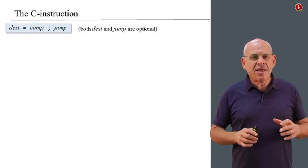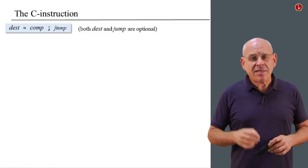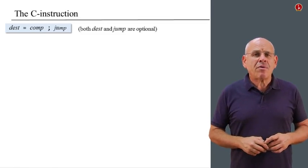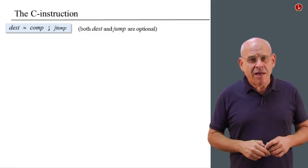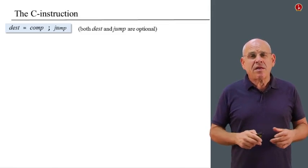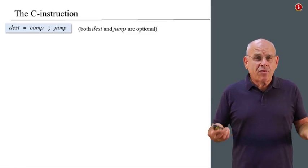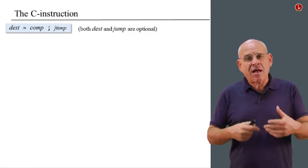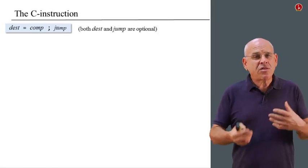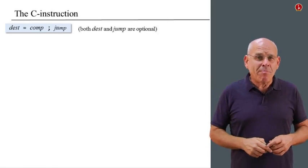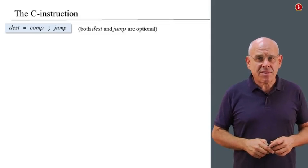The C instruction is the workhorse of the language. That's where most of the action takes place. And the syntax of this instruction consists of three different fields, which we call destination, computation, and a jump directive. Now, here is how it works. First of all, we compute something. And then we can do one of two things. We can either store the result of the computation in some destination, or we can use this computation to decide if we want to jump to some other instruction in the program. Now, this is the basic overall semantics of the C instruction.